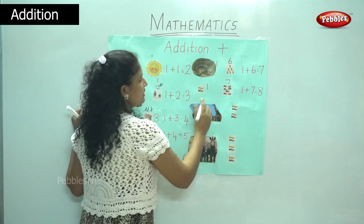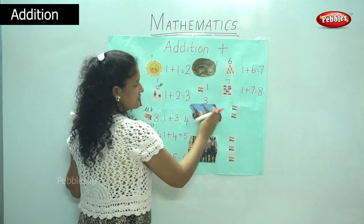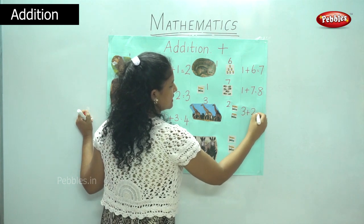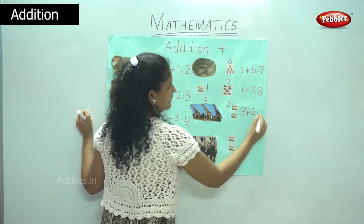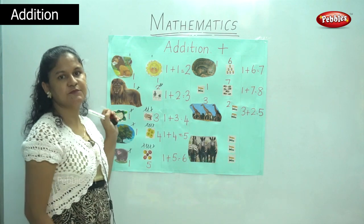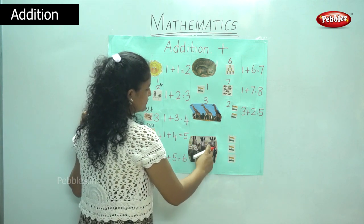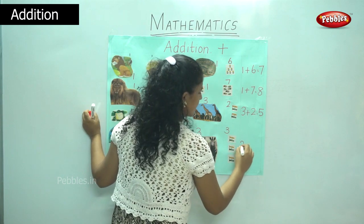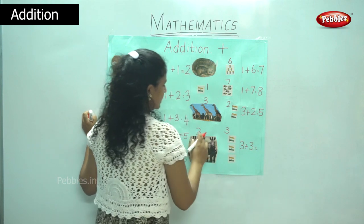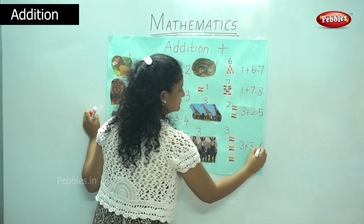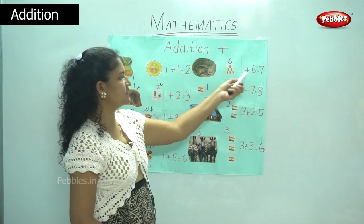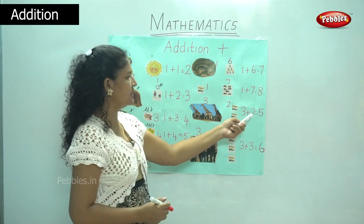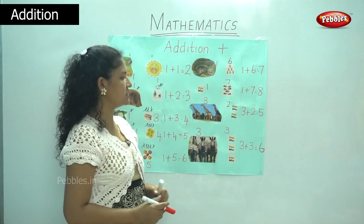In the next picture I have three giraffes and two flags. So three plus two is three, four, five — gives me number five. Three plus two gives me number five. The next I have three zebras and three flags. So three plus three is equal to three, four, five, six — it gives me number six. So one plus six gives me seven, one plus seven gives me eight, three plus two gives me five, three plus three gives me six.